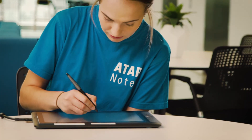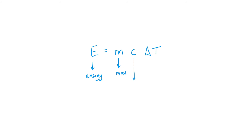Moving on to our equation, C is our constant for water. Usually this is 4.18 joules per gram per degree Celsius, or it may be 4.18 kilojoules per kilogram per degree Celsius. If you use your mass in kilograms then your answer for energy will be in kilojoules. If you use mass in grams then your answer will be in joules.